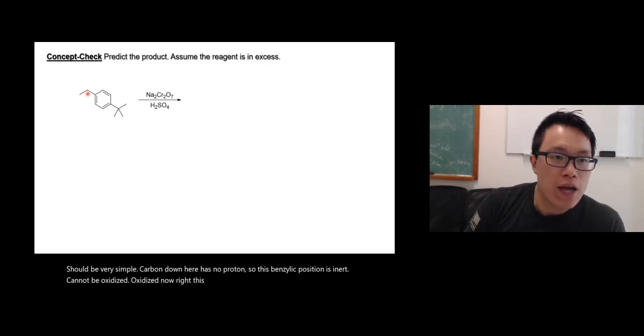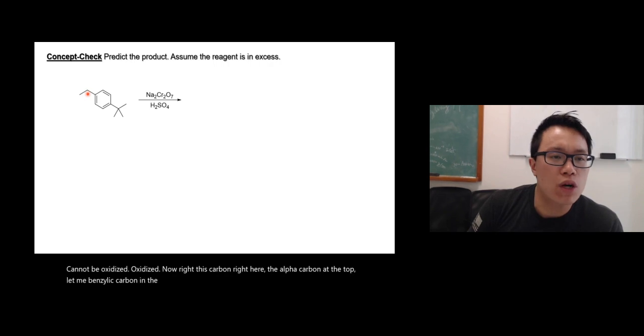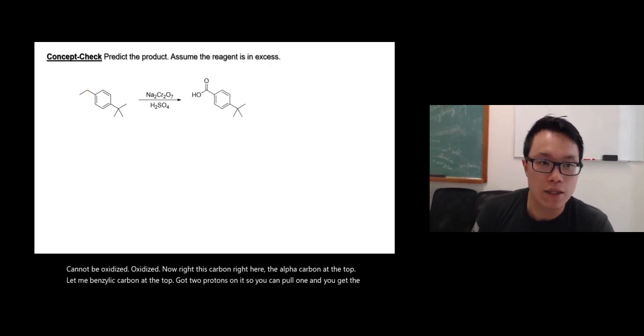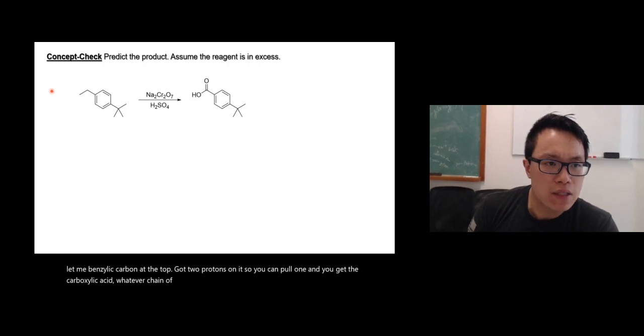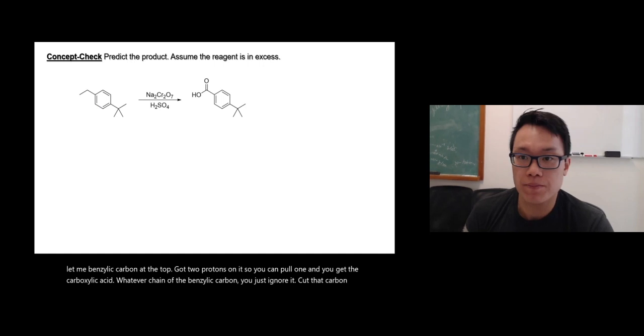This carbon right here, the benzylic carbon at the top, got two protons on it, so you can pull one and you get the carboxylic acid. Whatever chain is on the benzylic carbon, you just ignore it. Cut that carbon-carbon bond right away.